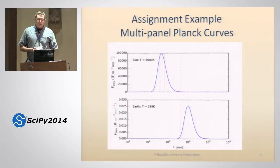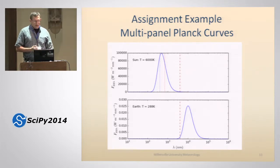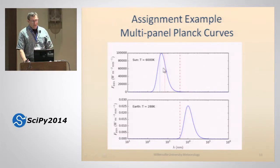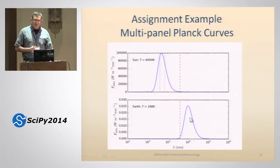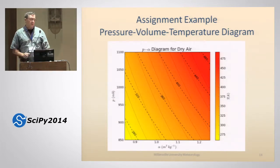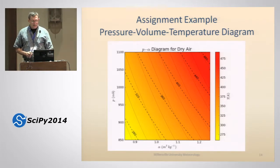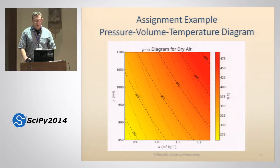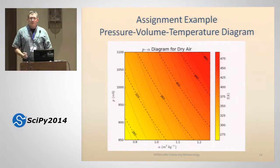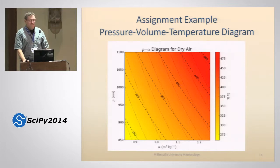We also teach plotting curves using examples from prior classes. We'll plot the blackbody radiation curves for the sun and earth on the same wavelength axes, marking the visible spectrum and the 4-micron cutoff between shortwave solar radiation and longwave terrestrial radiation. Or from the ideal gas law, students plot a pressure-volume-temperature diagram with pressure and volume as axes, color-coded by temperature. The goal is to make plotting relevant to other courses and reinforce scientific concepts alongside the programming.